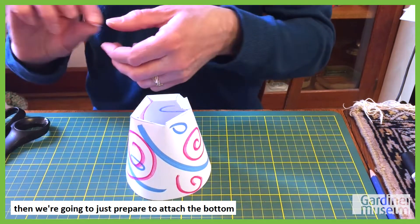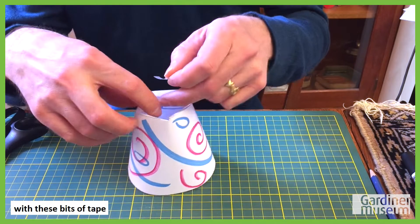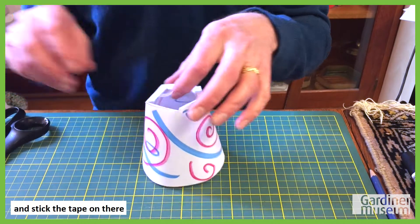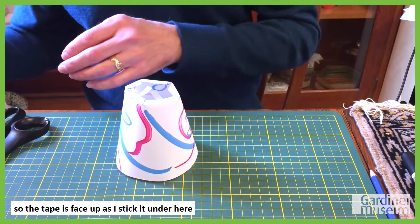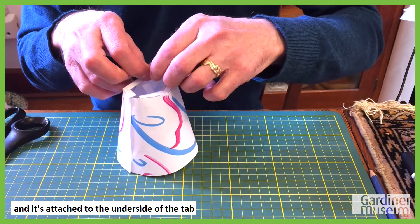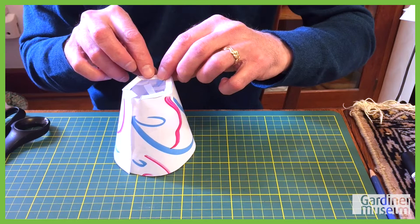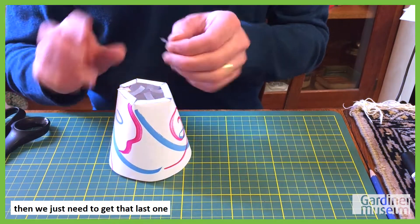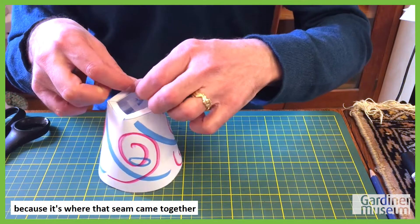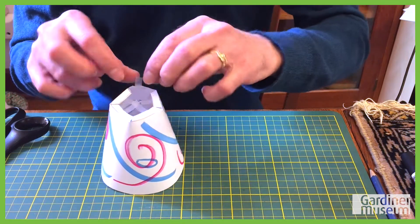Then we're going to just prepare to attach the bottom with these bits of tape. So you just pull them up a little bit and stick the tape on there. So the tape is face up as I stick it under here, and it's attached to the underside of the tab. Then we just need to get that last one, and this one is the little awkward one because it's where that seam came together.